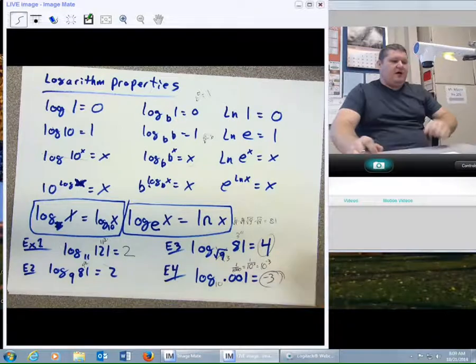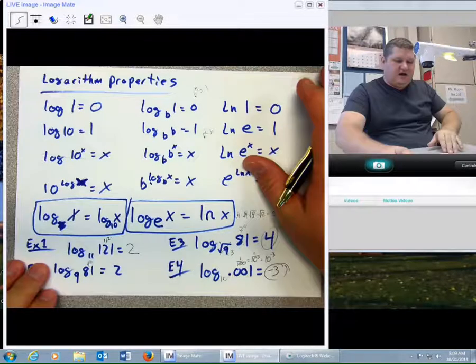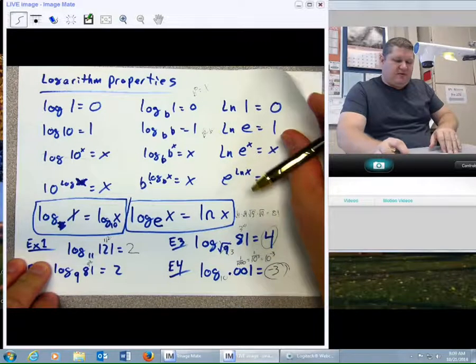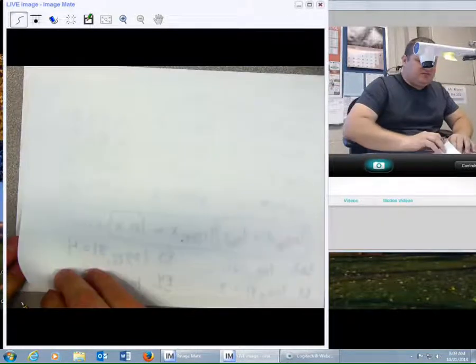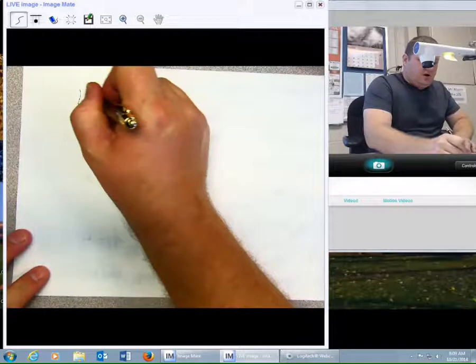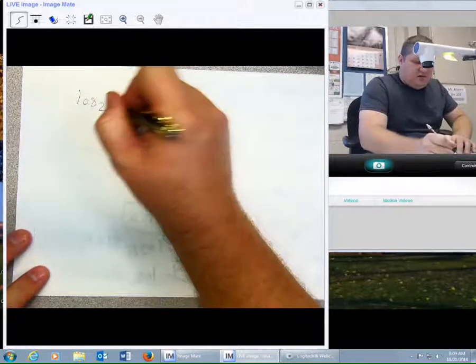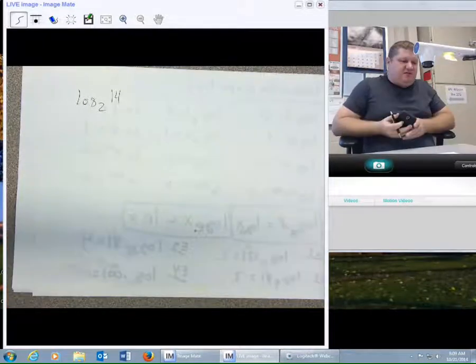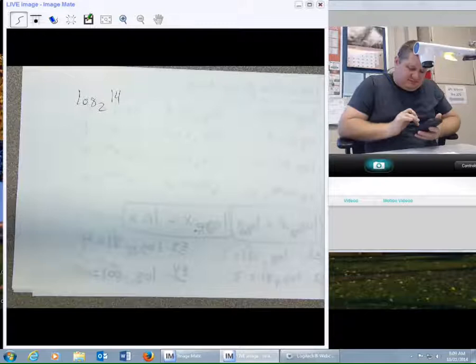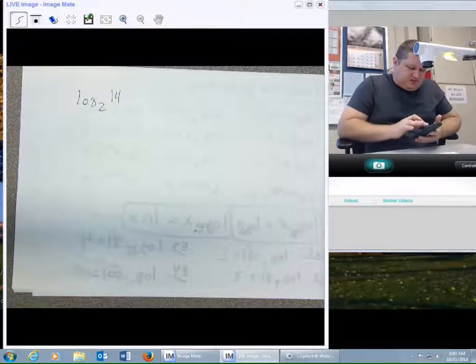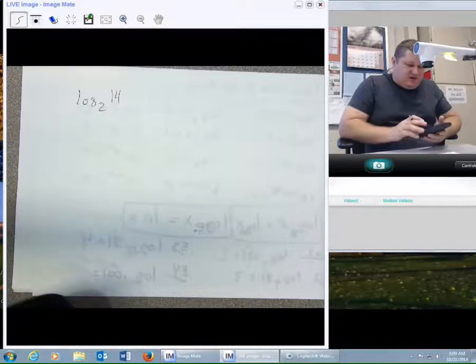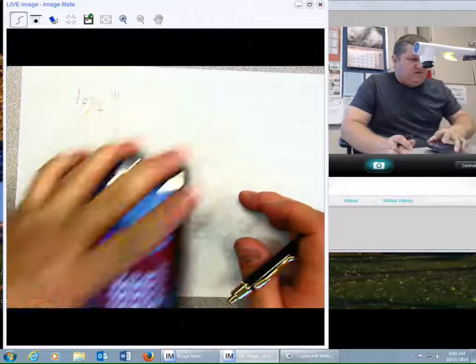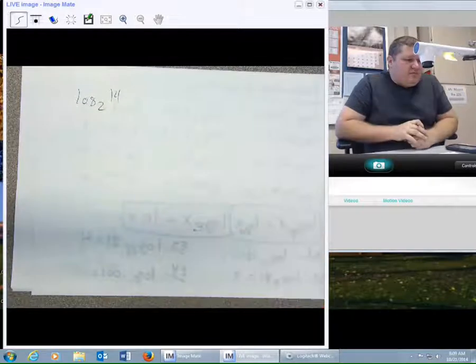We have a couple properties to base this off of. Now, sometimes we don't get the joy of having the properties available to us. Sometimes we simply have to do log base 2 of 14. And it doesn't go in evenly at all. If I say, how many 2s go into 14? I say, I don't know. In this case, the best you're going to be able to do is put it into a calculator. So, we'll talk about that property and how to solve that in the next video. Thank you.